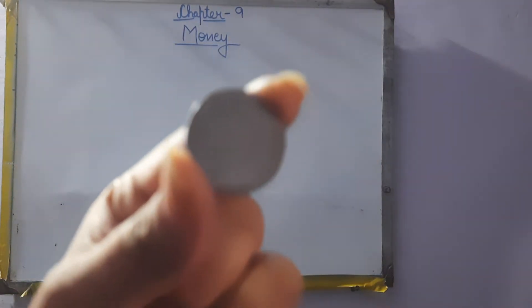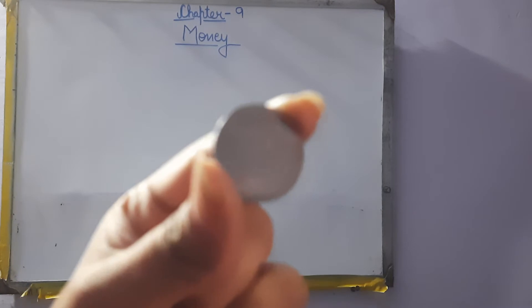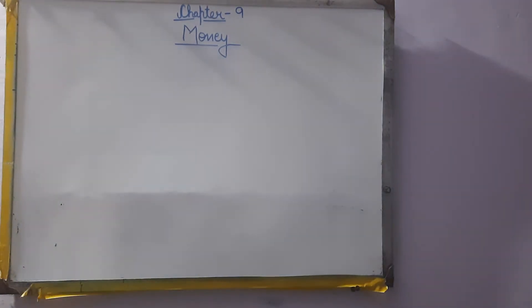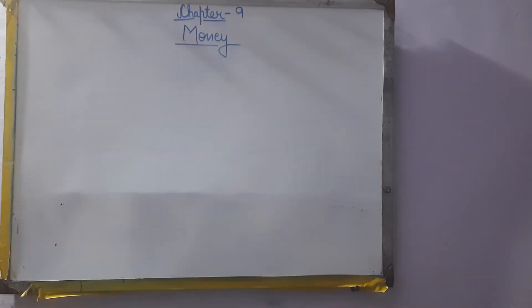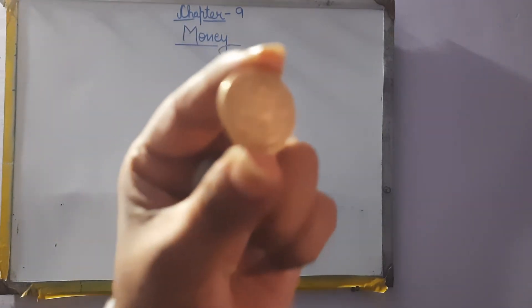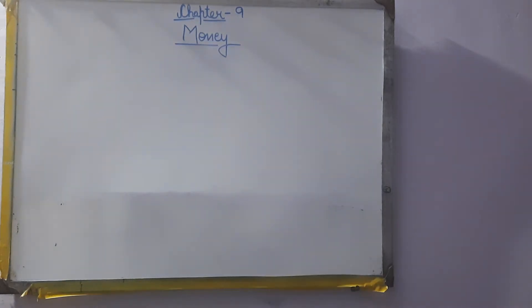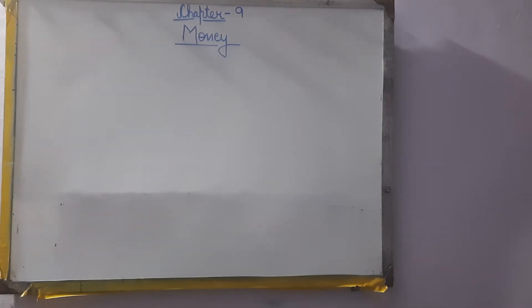Now, how many rupees coin is this? This is 1 rupee coin. This is 2 rupees coin. This is 5 rupees coin. Like this, we also have 10 rupees coin. Next come notes. We have currency notes of the following denomination.